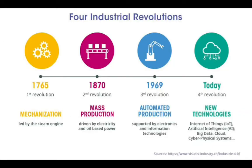So far we have witnessed four industrial revolutions. The first marked the shift from raw manpower to steam energy. The second added electricity and mass production. The third fueled IT industries. And currently we are going through the fourth industrial revolution — digitalization and artificial intelligence.